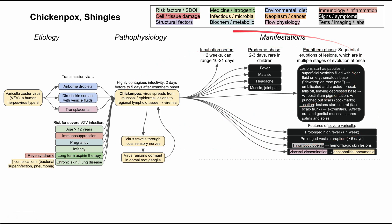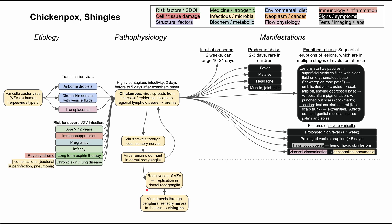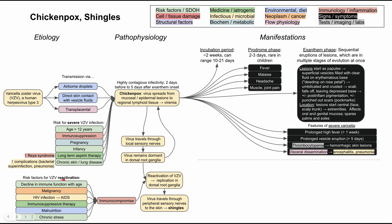Chickenpox typically occurs in children. Next is shingles, which is the reactivation of varicella zoster virus, usually many years later. The virus was dormant in the dorsal root ganglia — potentially for decades — and then reactivates and begins replicating there. The virus then travels through the peripheral sensory nerves back to the skin, essentially reversing its original path. This reactivation doesn't happen in everyone; it occurs in people who become immunocompromised for one reason or another.